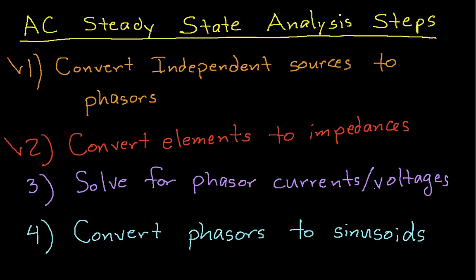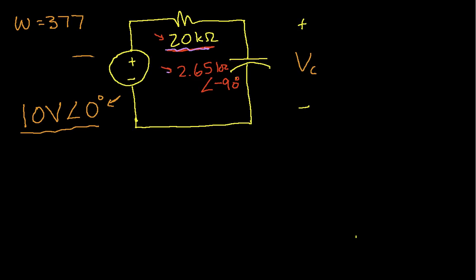If we go back to our circuit, we see that the voltage from here to here is 10 volts with an angle of zero. And we see that the 20k ohm and the capacitor are in series with each other. This implies, since we know the voltage across the series combination, we can use the voltage divider to find V sub c.